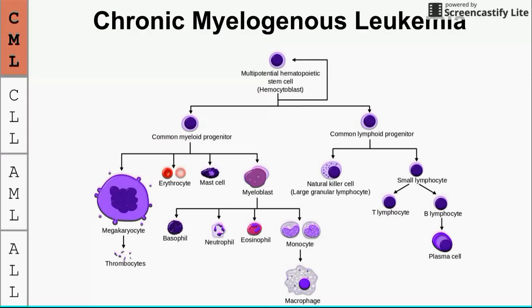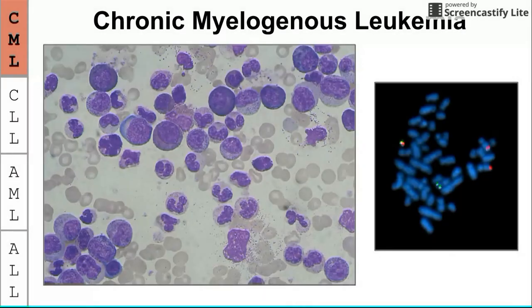Here we see the differentiation branch of blood cell development. The mutation in CML occurs at the multipotential stem cell at the very top, which is why the blood smear shows a heterogeneous population — lymphoid cells, granulocytes, red blood cells, even macrophages. On the right is the FISH assay result, where green and red signals for BCR and ABL appear together as a yellow dot, indicating the BCR-ABL fusion protein and confirming a positive result for CML.